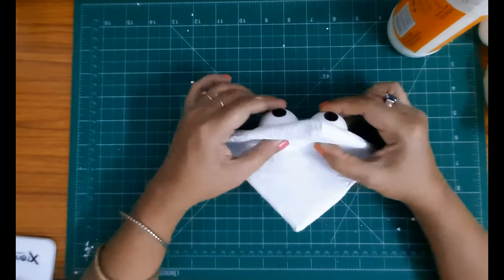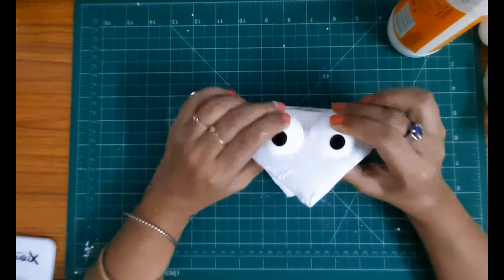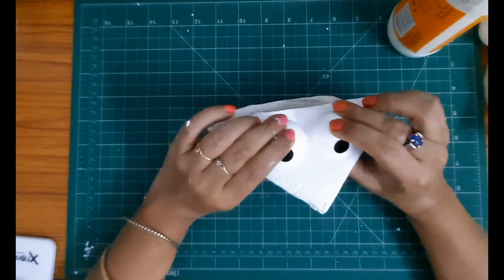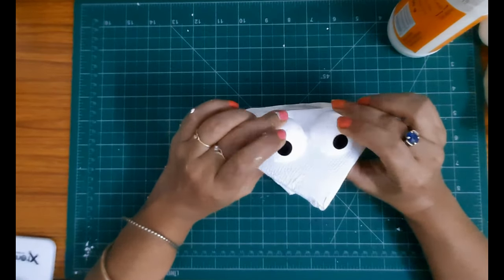Once this gets dry, what we are going to do is we are going to at least paint the mouth pink or red so that it gives a nice look when I am practicing the mouth.